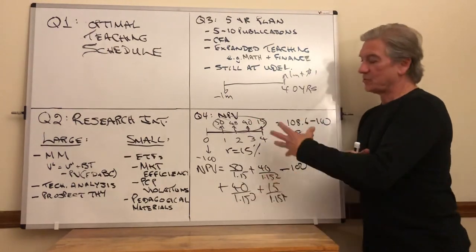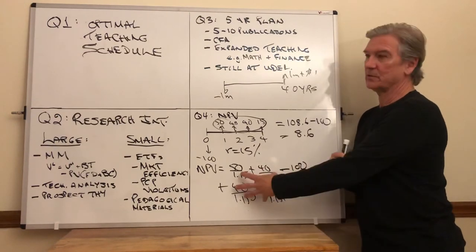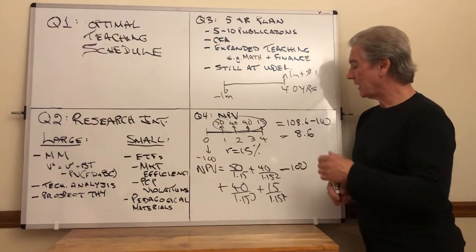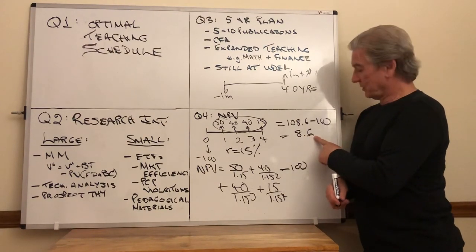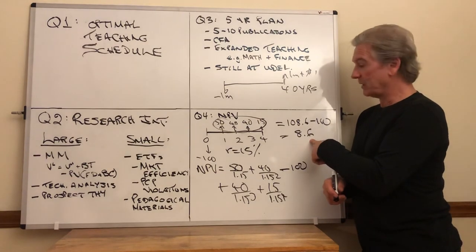This methodology is straightforward. It's a straightforward application of the time value of money. There's the value, there's the cost, it's all in present value terms at this point. And the result of it is plus 8.6. It's an investment that should be undertaken.